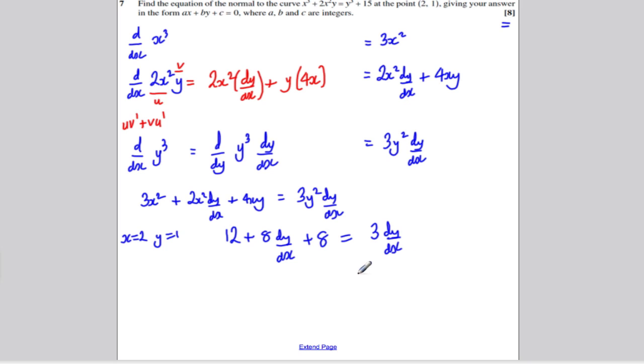Well, rearrange. 12 plus 8 is 20. Well, I'm going to subtract 20 from both sides to get that number on this side. So I'd have minus 20. 8 dy/dx's subtract 3 dy/dx's is 5 dy/dx's. So dy/dx is minus 20 over 5, which is equal to minus 4.